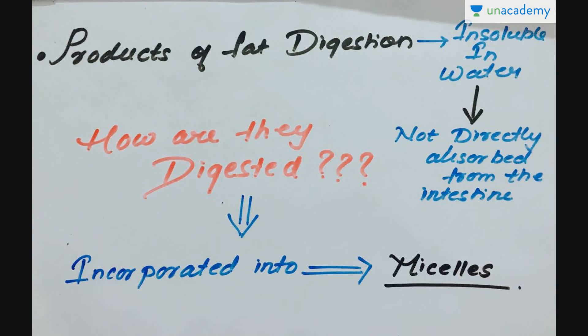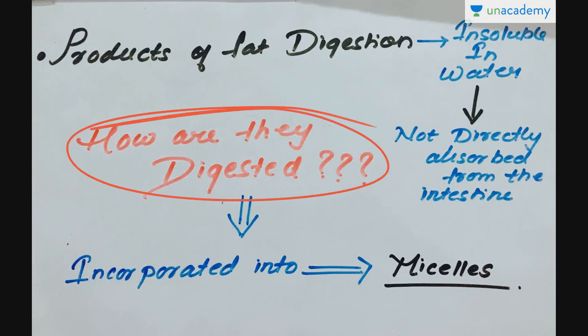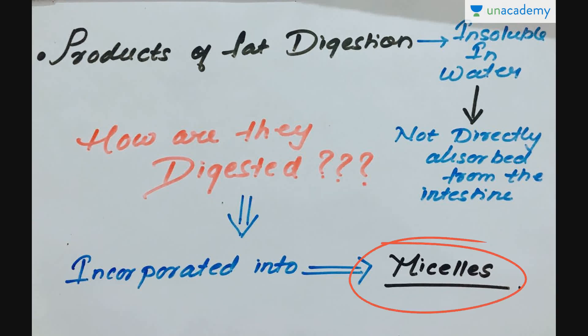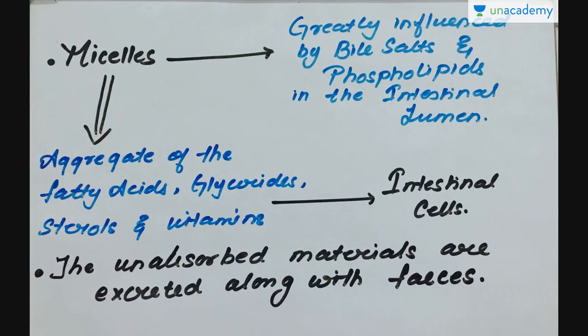The products of fat digestion — such as monoglycerides, triglycerides, and fatty acids — are insoluble in water, so they are not directly absorbed from the intestine. Instead, they are first incorporated into small spherical soluble droplets called micelles. The formation of micelles is greatly influenced by bile salts and phospholipids in the intestinal lumen.